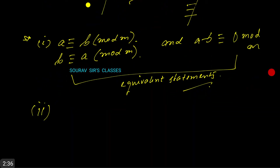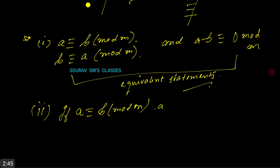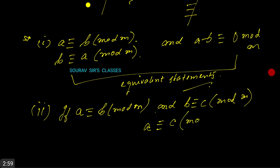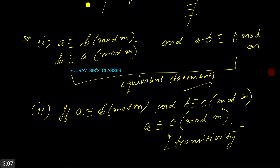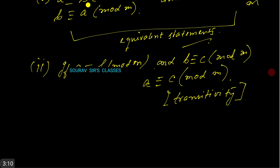If a ≡ b (mod m) and b ≡ c (mod m), then a ≡ c (mod m). This property is called transitivity.